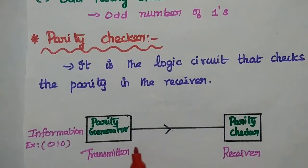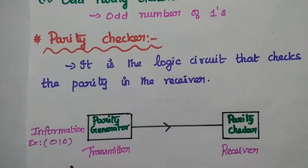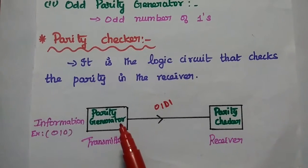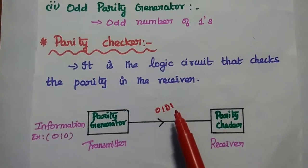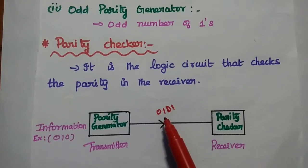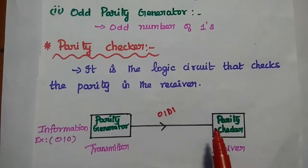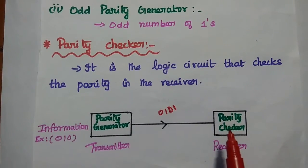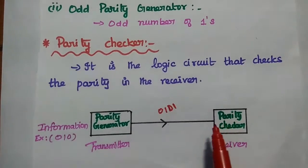This is the general diagram which represents both the parity generator and parity checker. Here we have the original information in binary, for example 0, 1, 0. If we want to transmit even number of ones, we have to generate 1 as a parity bit. So we transmit 0, 1, 0, 1 to the receiver. The parity checker checks whether the received signal has even number of ones. If it is even, the original information is received with no error. If the received signal has odd number of ones, then there may be some error.